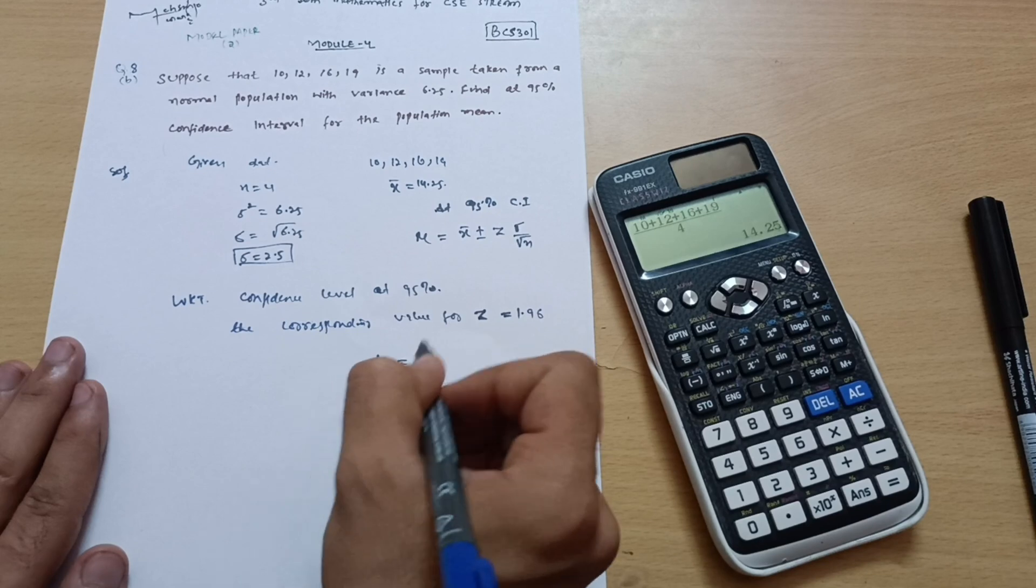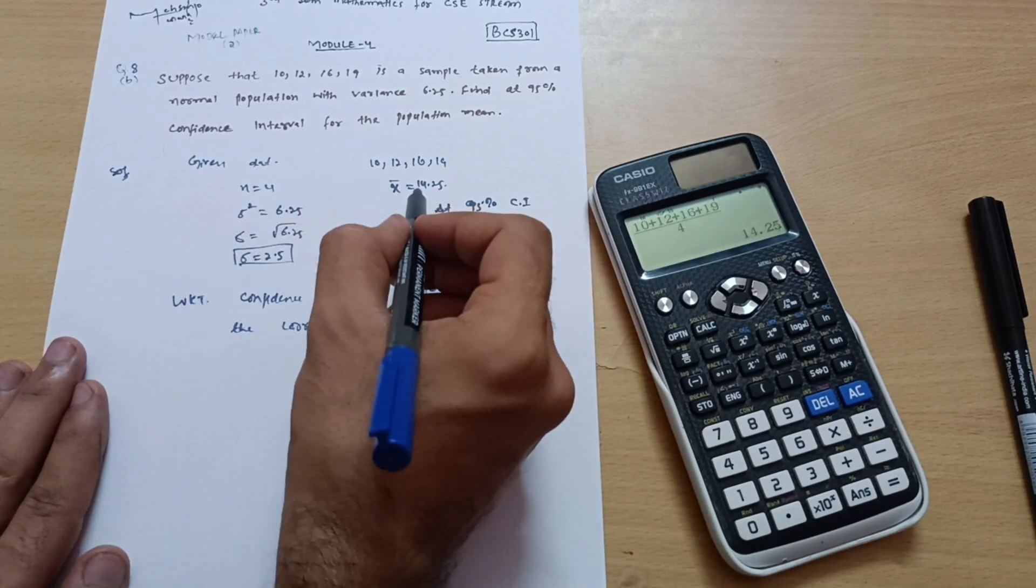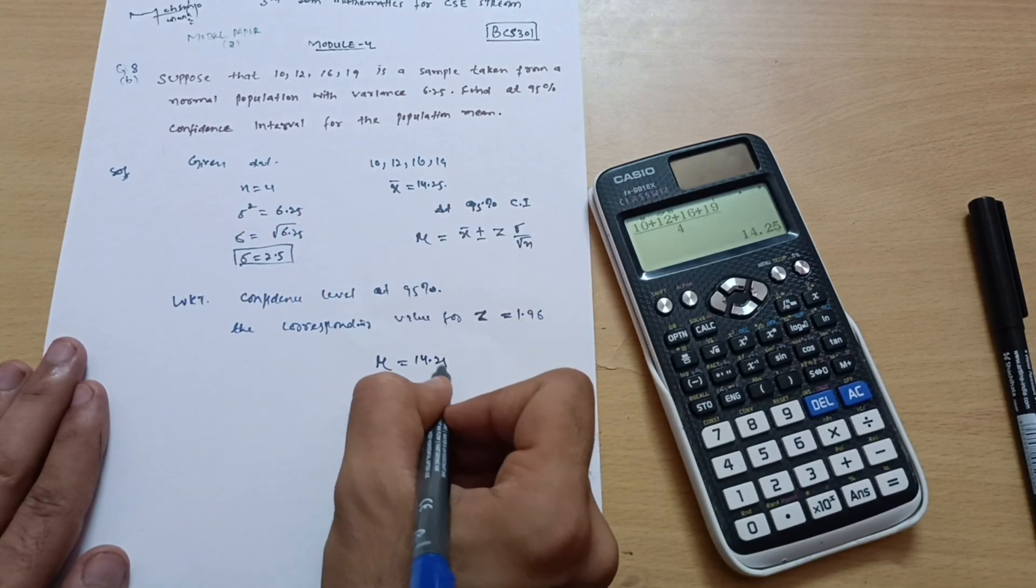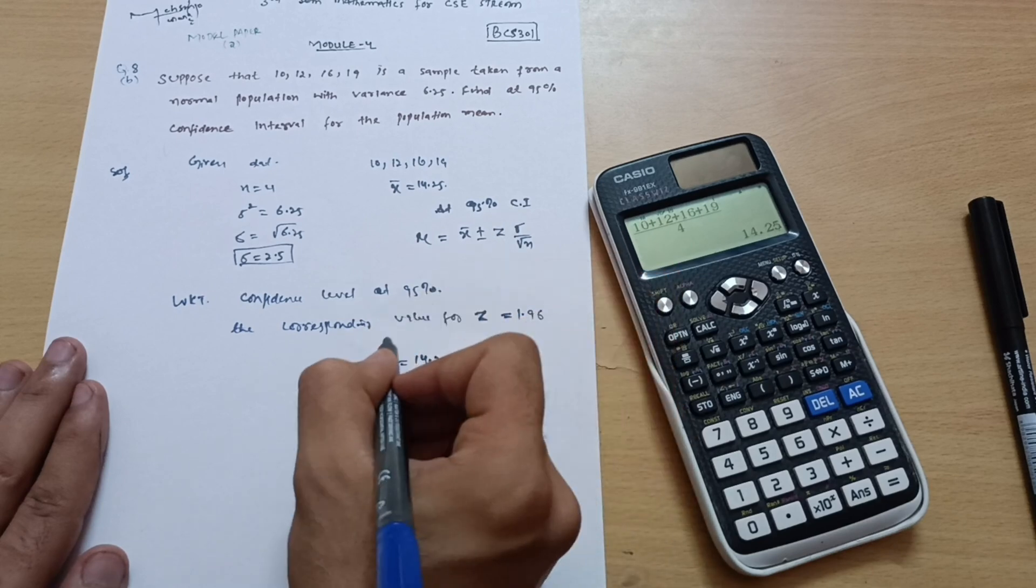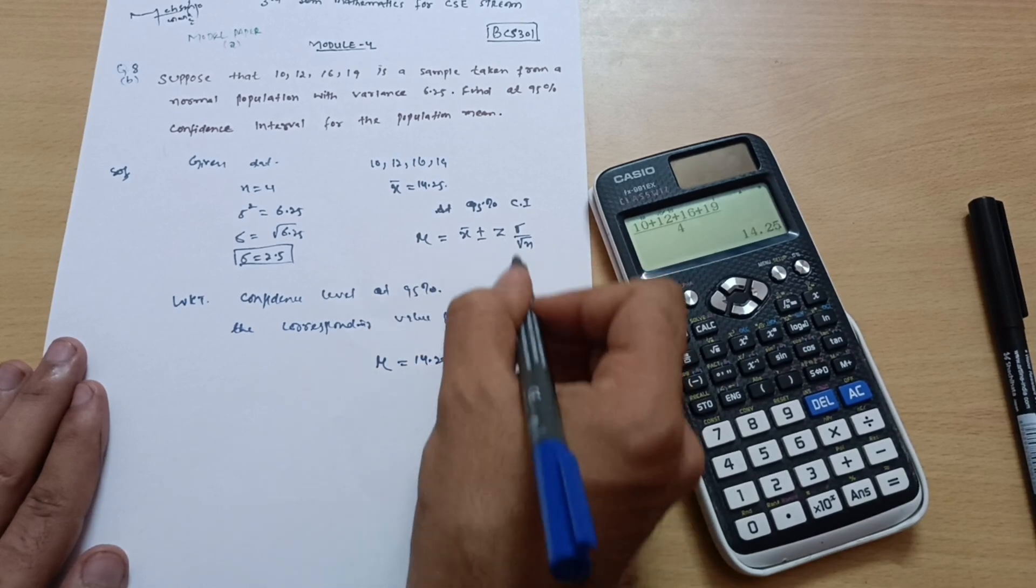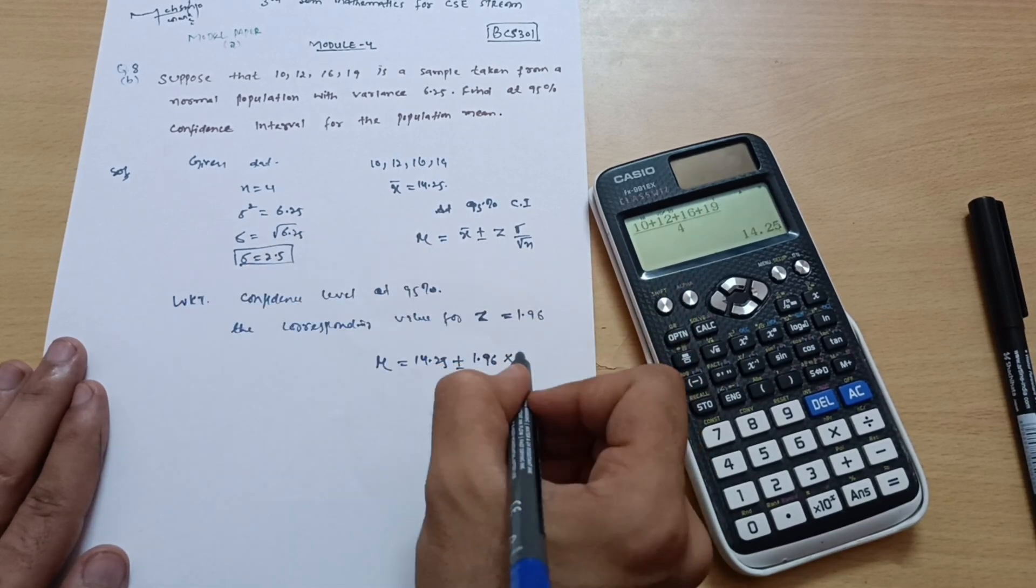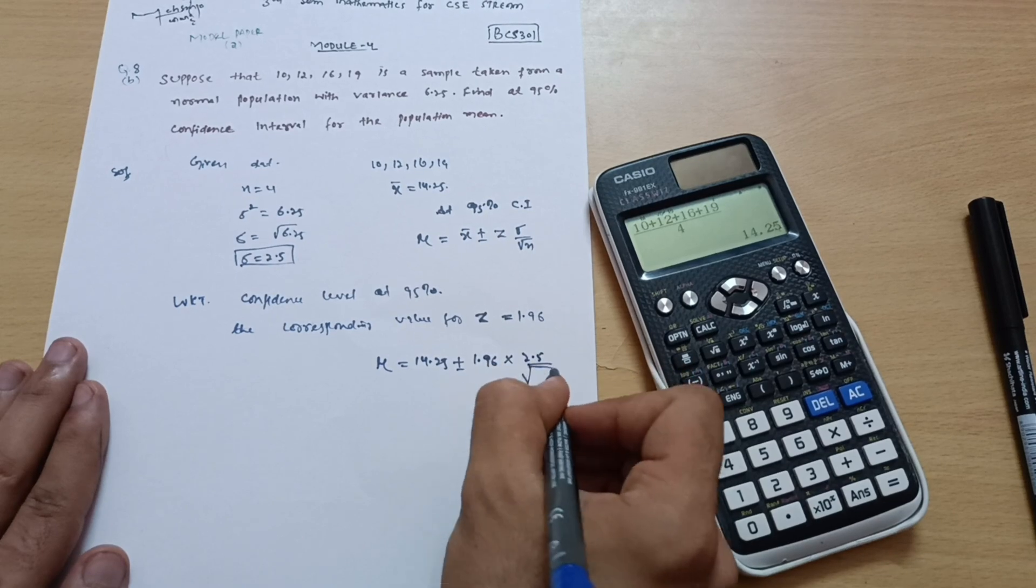So just put down this value in this particular equation. Mu is equal to what is the x bar value? 14.25 plus minus z. Z value is here 1.96. Sigma is here 2.5 divided by square root of n, sample size is 4.